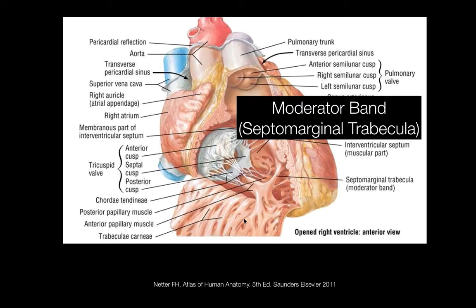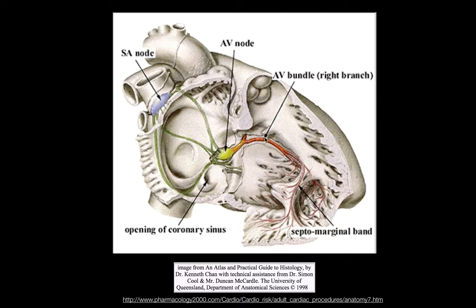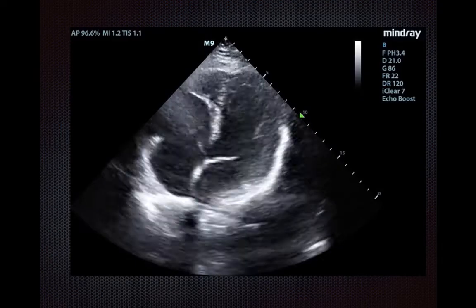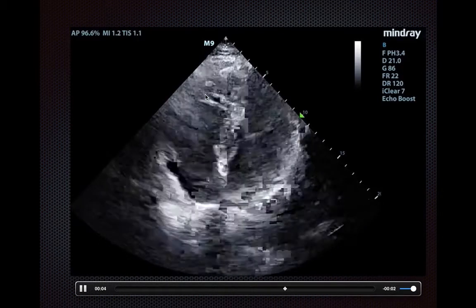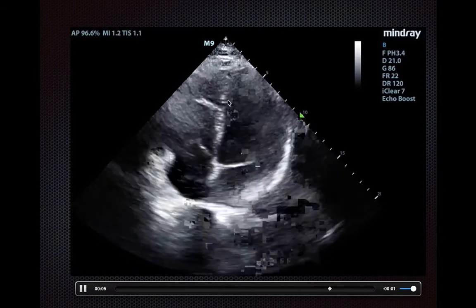In addition, you may also see the moderator band going across the chamber. The moderator band carries the right bundle branch across the chamber into the anterior tricuspid papillary muscle. And here's a nice clip of the moderator band seen within the right ventricle.